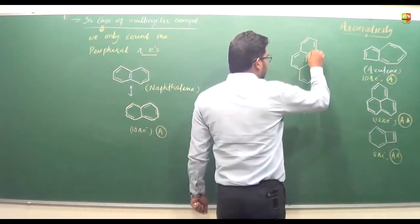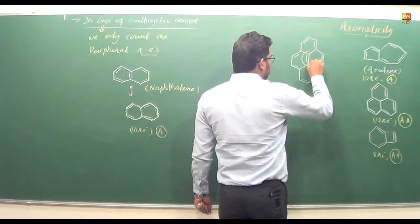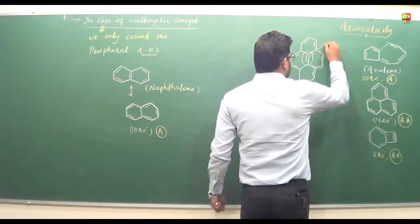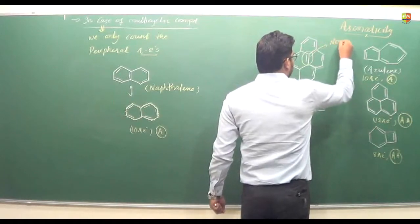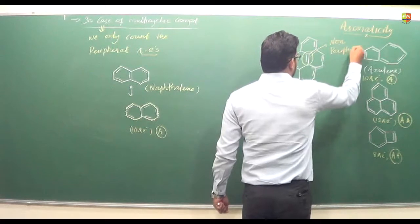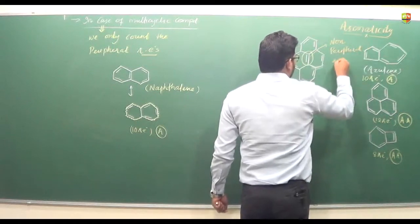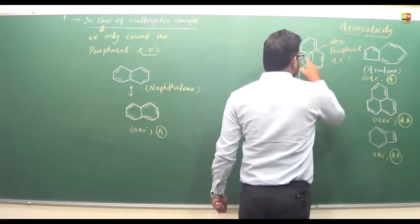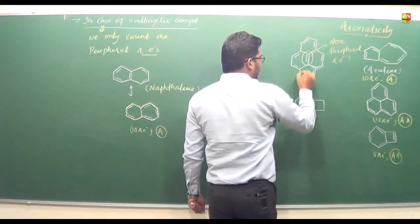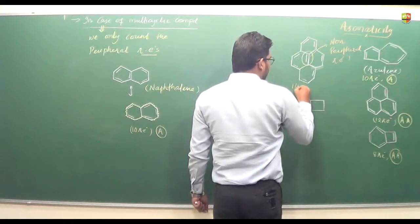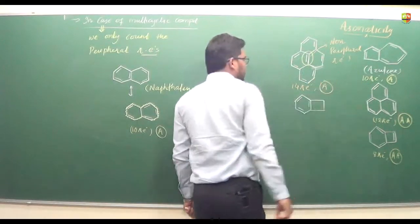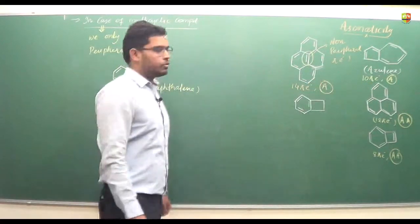Here you see this carbon — this is the non-peripheral pi electron, so we call it non-peripheral pi electrons and we will not count this. Counting only peripheral: 1, 2, 3, 4, 5, 6, 7 — so 14 pi electrons. It is aromatic in nature for n equals 3.